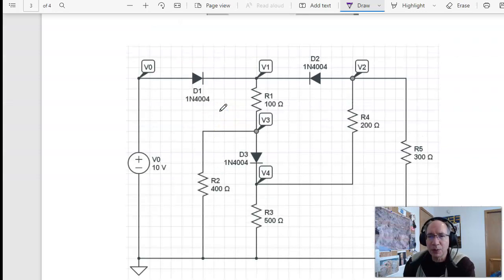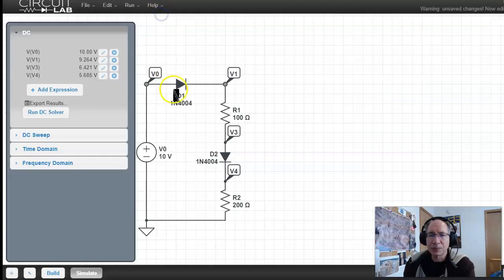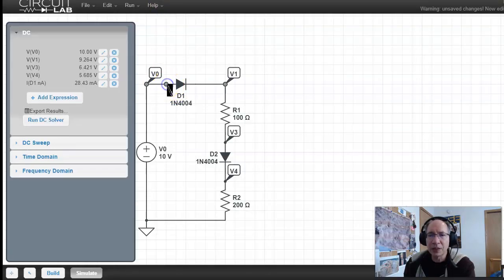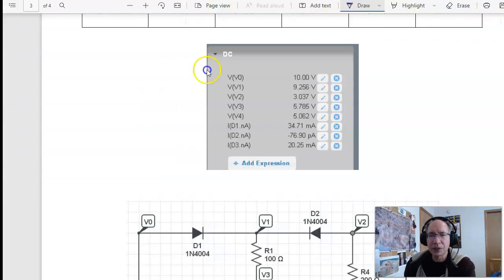If you do it for the whole circuit, these are the voltages CircuitLab comes up with. And just for fun. If you want to know the current through the diode, just click on the left side of the diode. And it'll tell you what those currents are as well. If you wanted to know.